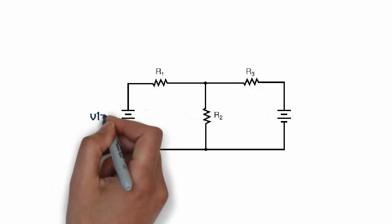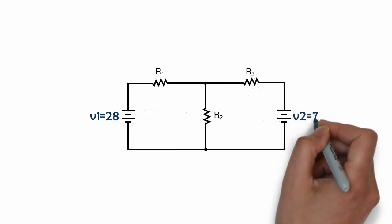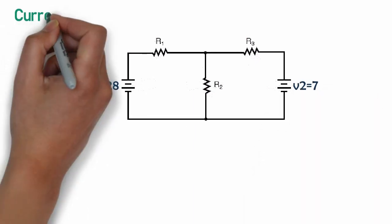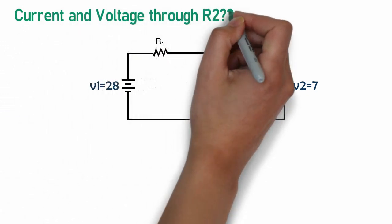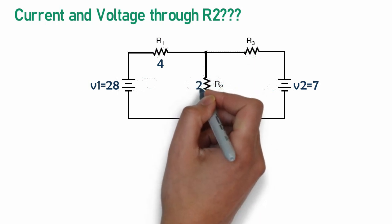Consider the given circuit with having two sources. Now, here we need to find current and voltage across R2. Value of three different resistors are 4 ohm, 2 ohm and 1 ohm respectively.